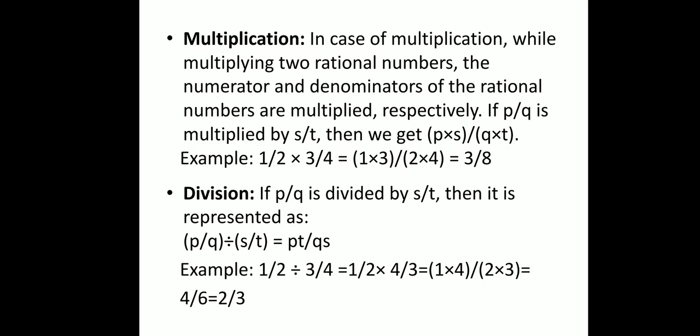Coming to division: if P/Q is to be divided by S/T, we change the division sign to multiplication and take the reciprocal of S/T, giving P/Q × T/S = (P×T)/(Q×S). For example, 1/2 divided by 3/4: we change the division to multiplication and flip 3/4 to 4/3, giving (1×4)/(2×3) = 4/6, which in simplified form is 2/3.